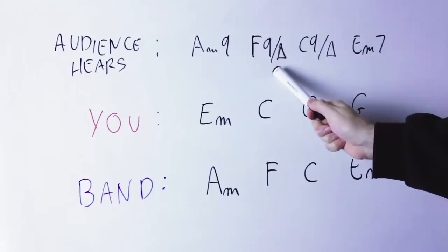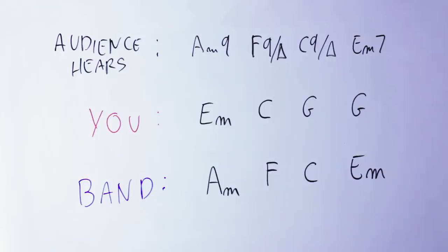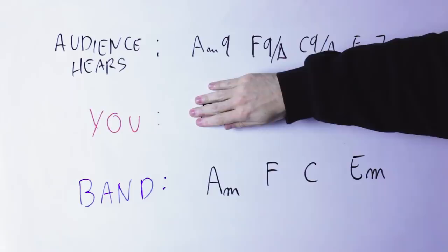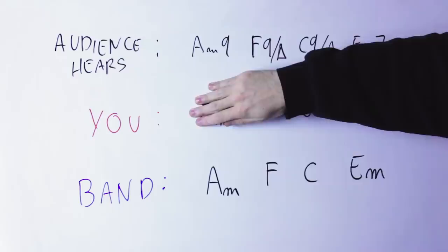The band is going to play A minor F C E minor and I'm going to play E minor C G G. Before we play that though let's play the plain version just to have a comparison. So the band is playing A minor F C E minor, it doesn't sound bad it's just plain.